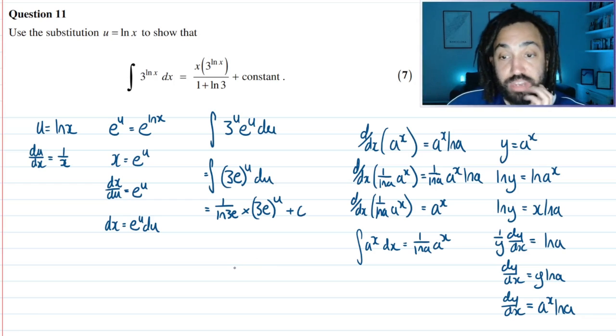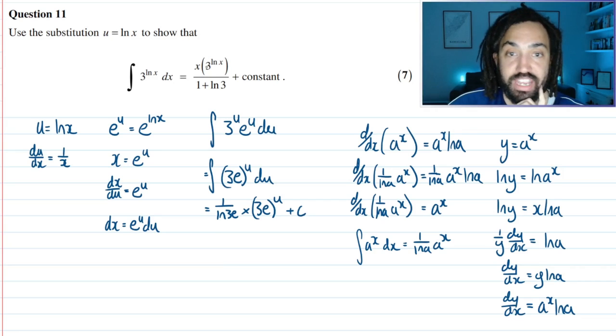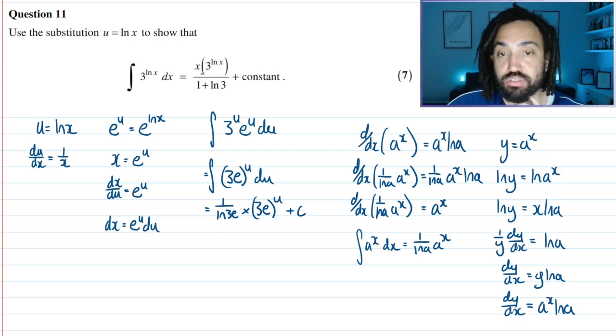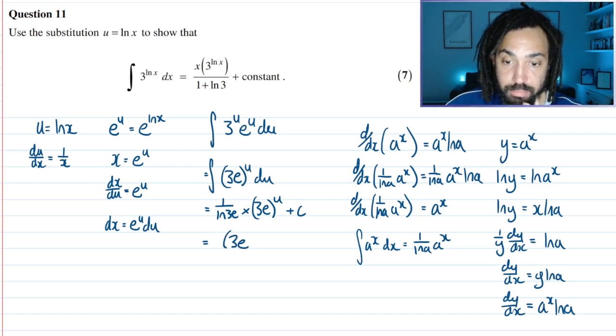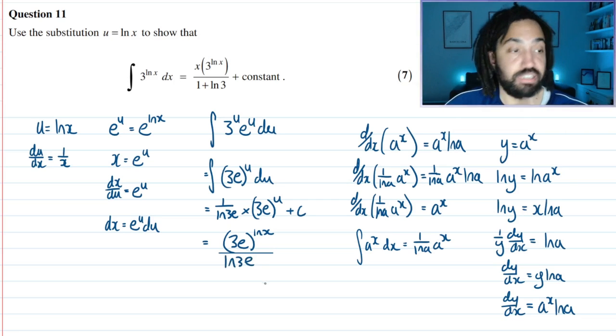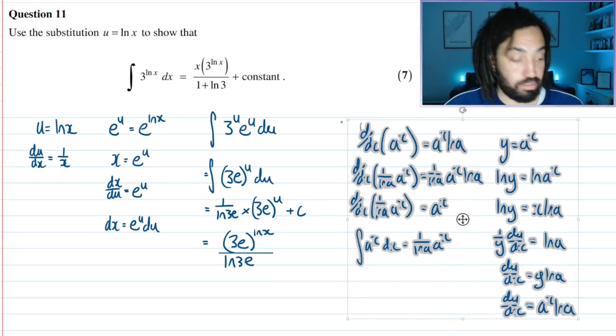Great, so we have integrated now. Now it's just a case of putting it back in terms of x, because we can see here that the integral has been evaluated in terms of x. I'm going to write it as (3e)^(ln x), which is u, all over ln of 3e.